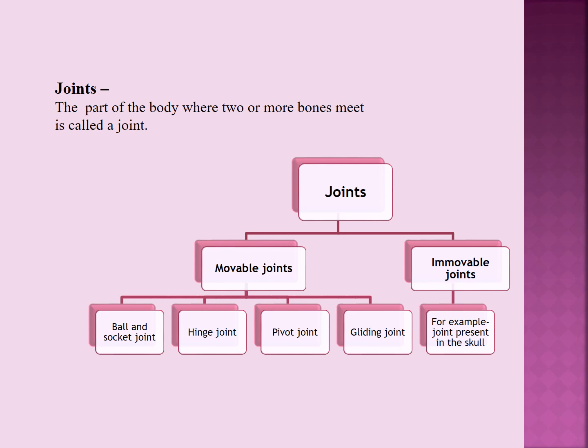From the name itself, we can understand that movable joints can move whereas immovable joints cannot move. Immovable joints are present in the skull. As we have studied in our last class, the skull consists of 22 bones. Among these 22 bones, only one bone — that is your lower jaw — is movable. The rest are all immovable in nature.